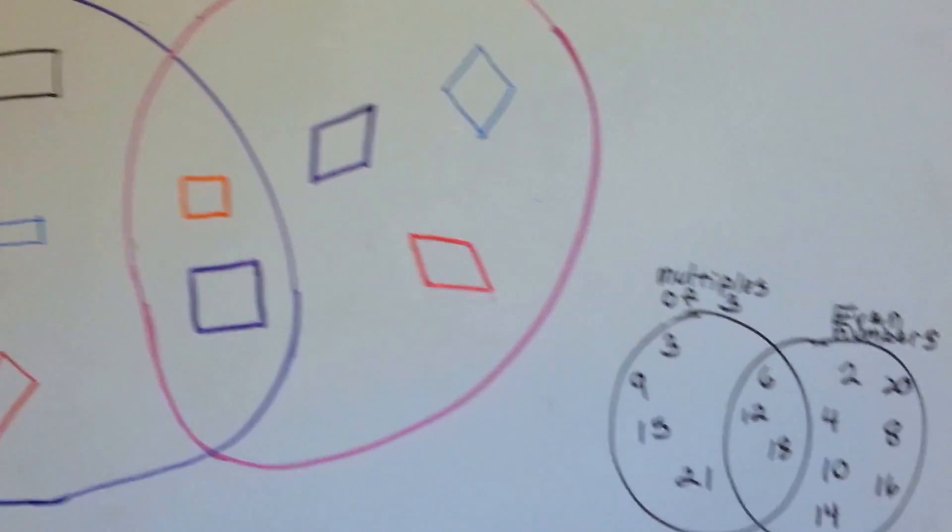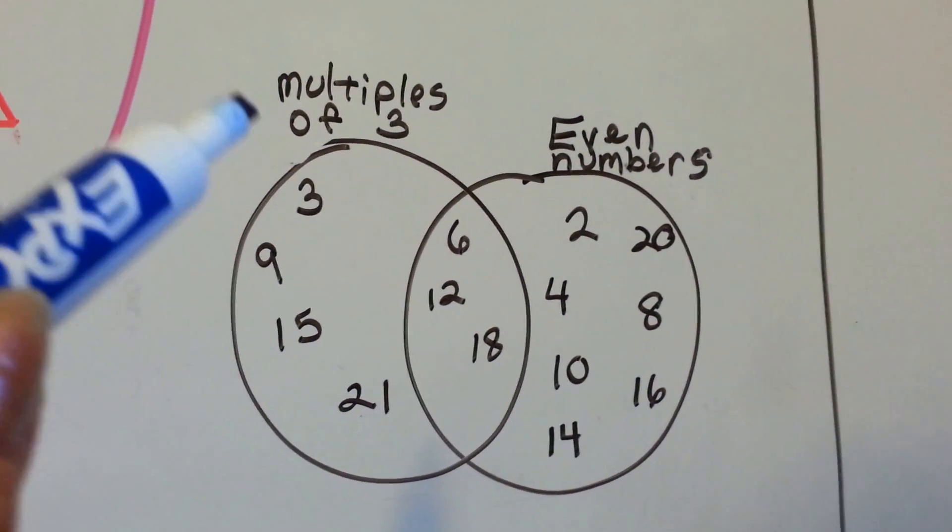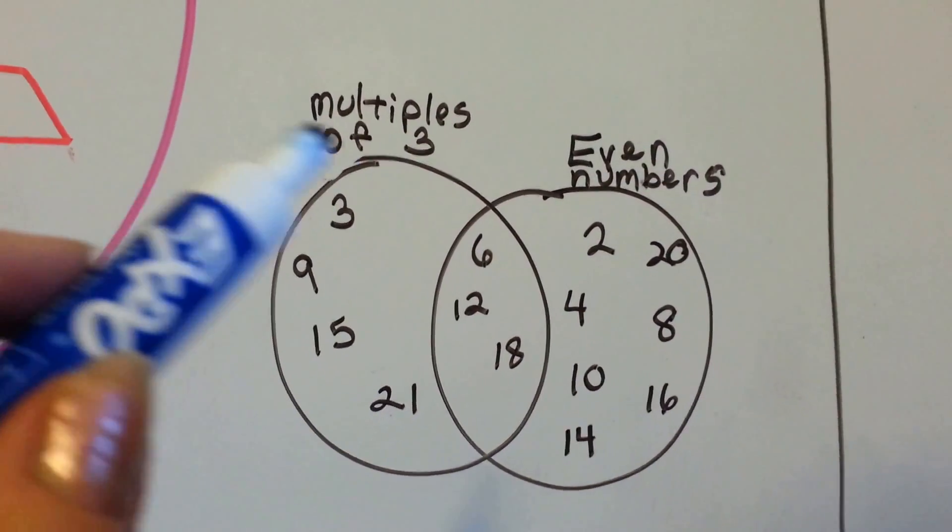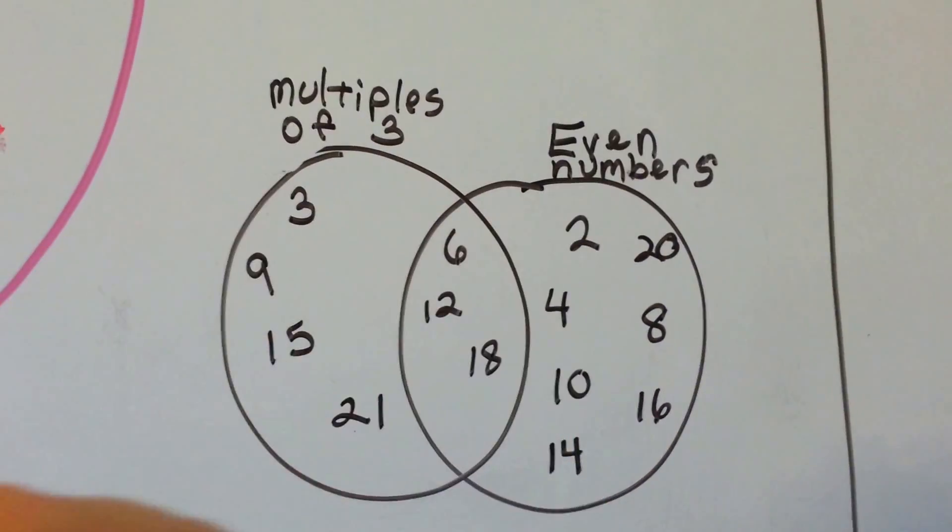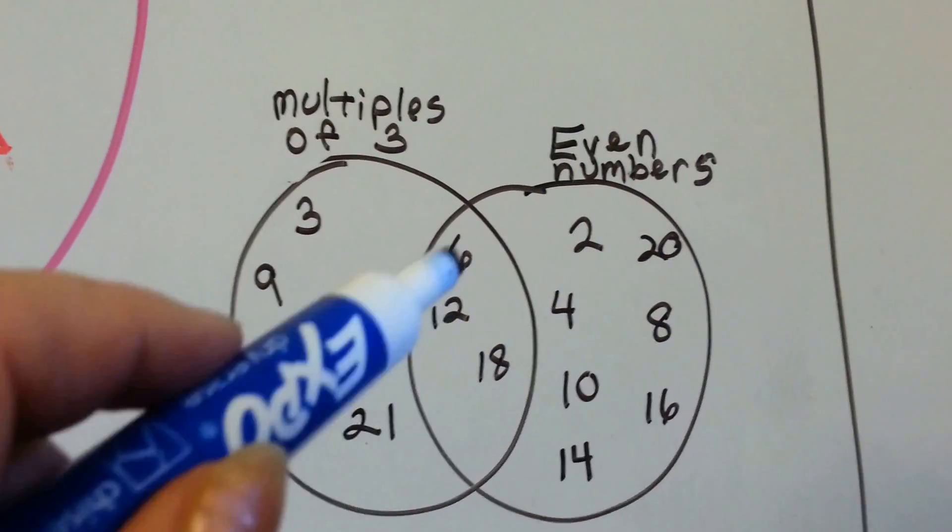Let's look at another small one here. Here's multiples of 3, like the answer in the 3 times table. Here's even numbers, and here's the center that are both multiples of 3 and even numbers.